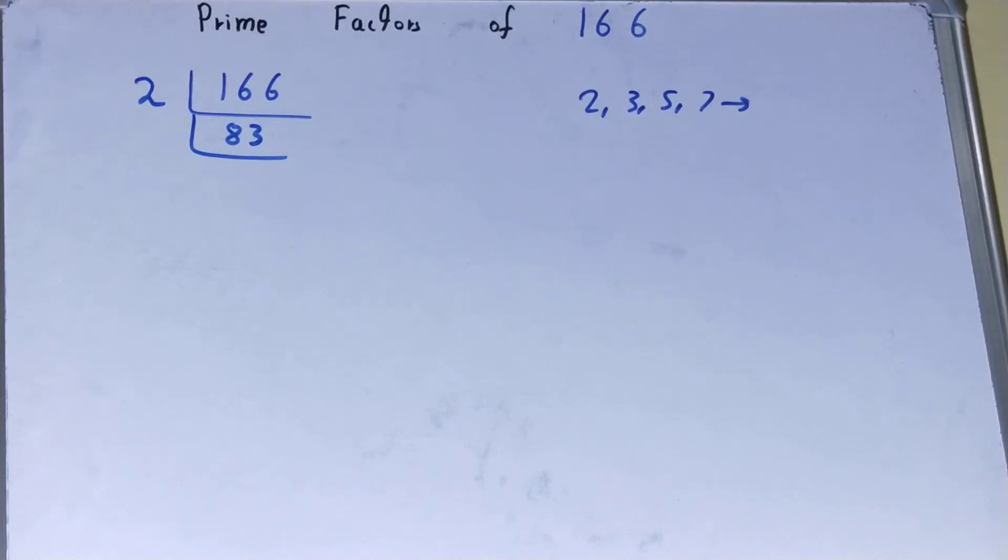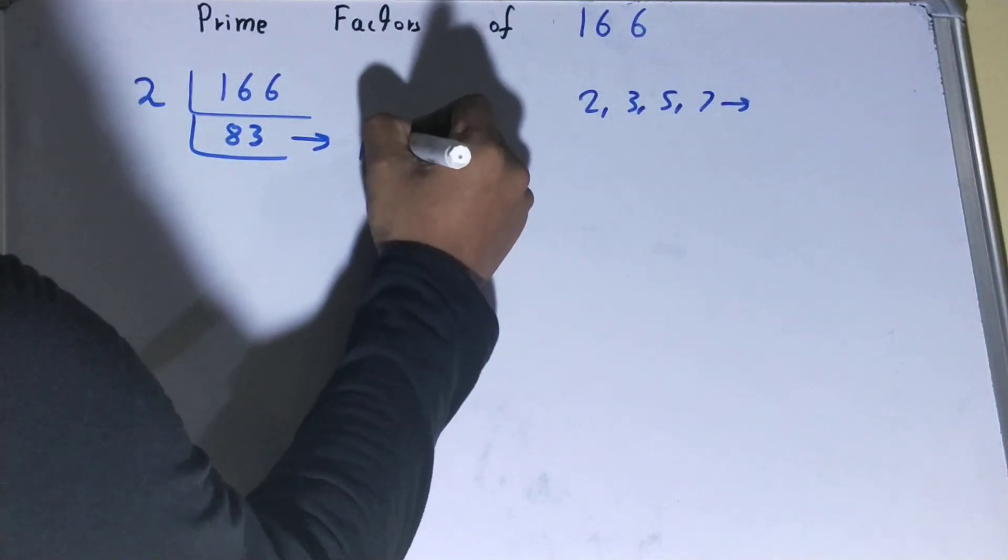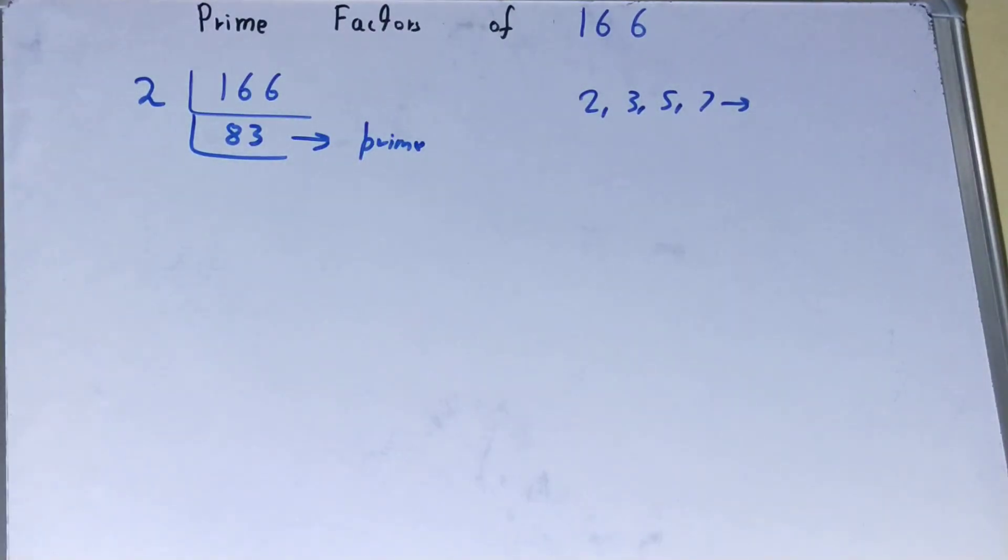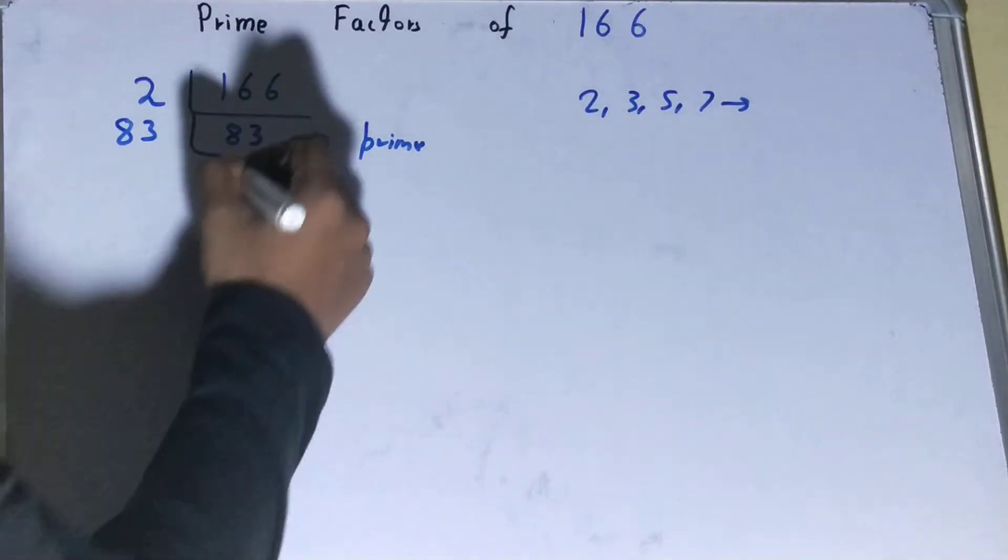Clearly not, not with 3, not with 5, not with 7. Why? Because 83 is prime itself. To divide 83, you need 83 on the left hand side. Once you do so, you'll get the value as 1.